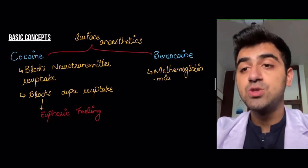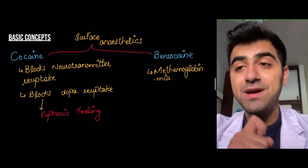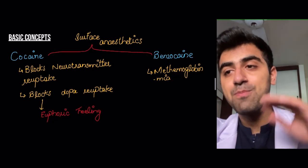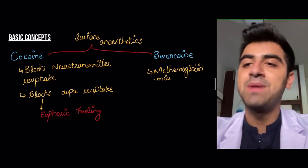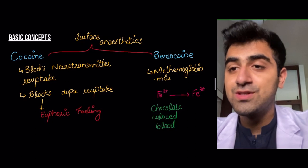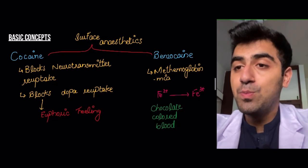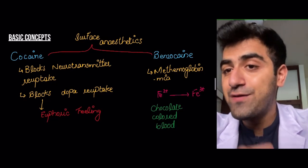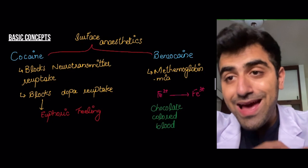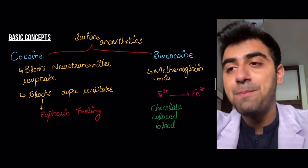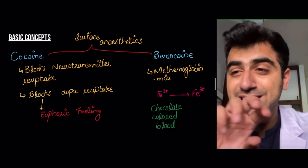Benzocaine has been associated with methemoglobinemia. You need to understand the presentation — a question might describe a patient recently started on benzocaine for a procedure who now presents with signs of methemoglobinemia. Normally, hemoglobin contains iron in the Fe²⁺ form, but methemoglobinemia means it is oxidized to Fe³⁺ form — an electron is removed — and the patient will have chocolate-colored blood, which is the classic presentation.